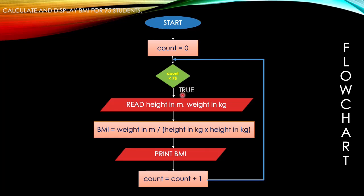If true, then we calculate the BMI — so we start the process again: input, process, print BMI, and then update the counter again. Count equals count plus 1. Just now count was 1, so now it's 1 plus 1 equals 2. Very good, very easy.